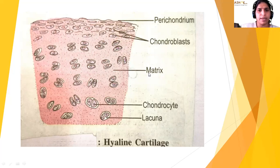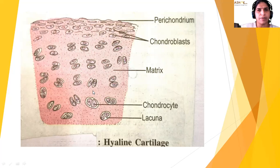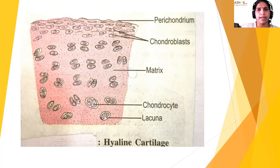The lacunae are scattered in the matrix. You can observe one, two, or even four cells forming here because chondrocytes — the cartilage-forming cells — undergo cell division within the lacuna. The function of this cartilage is to avoid friction between bones, and it gives rigidity and flexibility to structures like the trachea. Cartilage is mainly found in the nasal septum, ends of long bones, and as rings of the trachea.